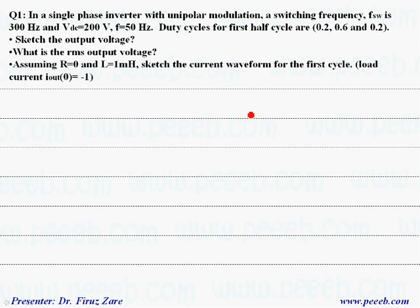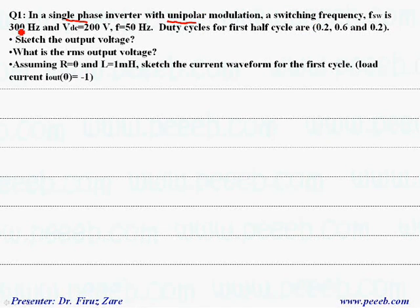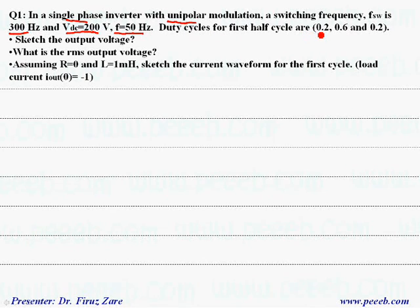In this example we have a single-phase inverter with unipolar modulation and the switching frequency is 300 Hz. The DC link voltage is 200 volts and the output frequency should be 50 Hz. We have duty cycles for the first half cycle, meaning we have three duty cycles.